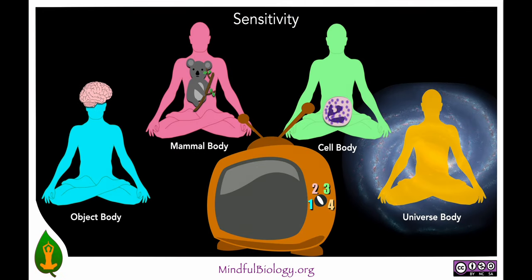The four channels of experience that we're looking at are: the object body — the body of ideas or concepts, looking at the body as a separate thing from the so-called mind. The mammal body, which is the body of direct experience of sensation, emotion, and urges. The cell body, which in some traditions is referred to as the energy or subtle body — this is a sense of aliveness which is rather diffuse. And the universe body, which is an experience of our human body as seamlessly involved in the rest of the cosmos.